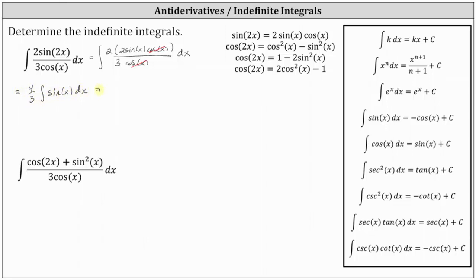From here it's straightforward, because we have a basic integral formula for the integral of sine x dx, which is equal to negative cosine x plus c. This gives us four thirds times negative cosine x plus c. Simplifying, we have negative four thirds cosine x plus c for the indefinite integral or antiderivative.